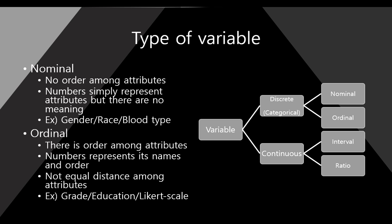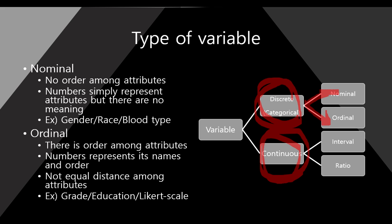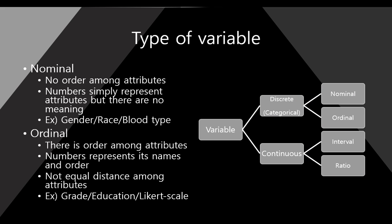Very simple. So, variable could be categorized into two parts. Here, first one, discrete or categorical. And the second one is continuous. As you can see here, each discrete and continuous also have two types of variable. Nominal, ordinal, interval, ratio. Let me see one by one.